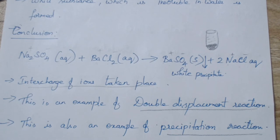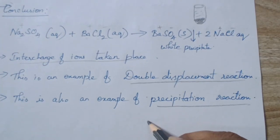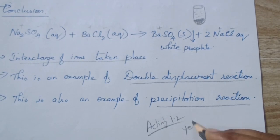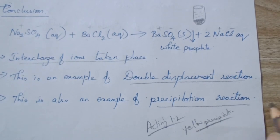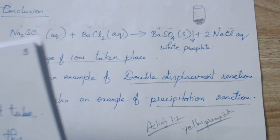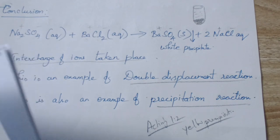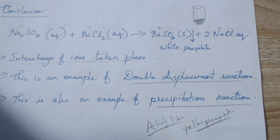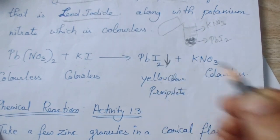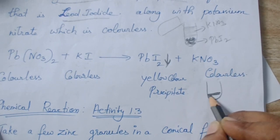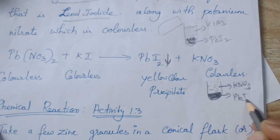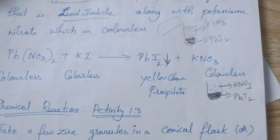We have seen one more precipitation reaction — which activity? Do you remember? Activity 1.2 — the yellow precipitate. Lead nitrate reacts with potassium iodide. This is also an example of a precipitation reaction because you got a yellow color precipitate. KNO₃ (potassium nitrate) is colorless. You will get a yellow precipitate at the bottom and a clear solution above — that yellow precipitate is lead iodide. This is also an example of a precipitation reaction.